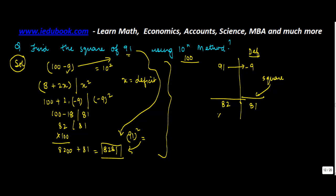Since the base is 100, you multiply it by the base which is 100. You get 8200, you add 81 to it.